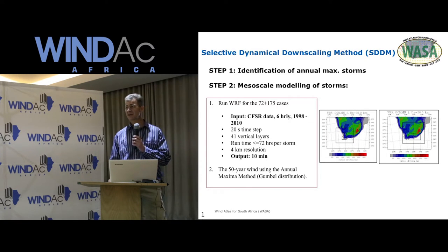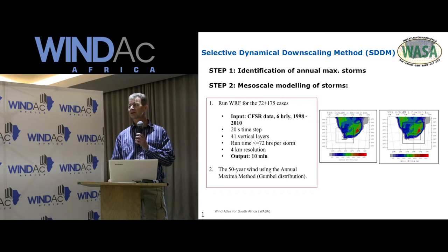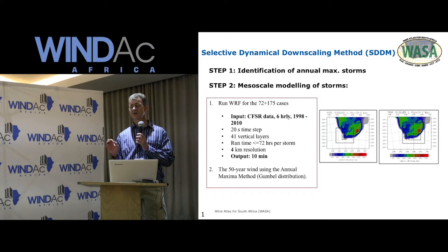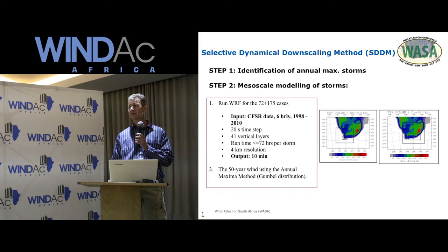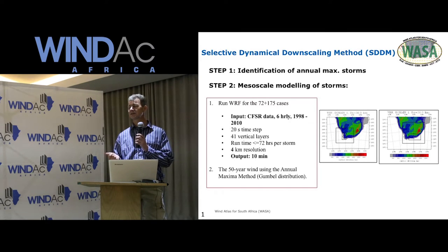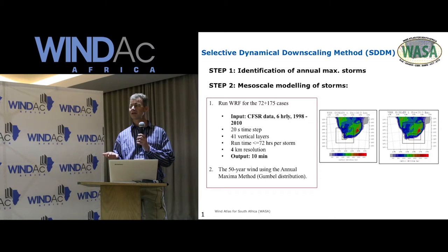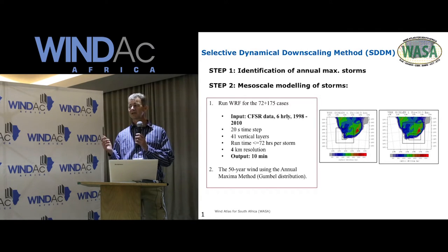A method we primarily applied is what we call the selective dynamical downscaling method. The first step was to identify the annual maximum storms and then do meso-scale modeling of those storms. We ran the WRF model for two domains for 72 and 175 cases. The input was CFSR data at 6-hour time resolution from 1998 to 2010, with a 22-second time step, 41 vertical layers, and a runtime of about 72 hours per storm. The output was at 4-kilometer resolution in 10-minute intervals.